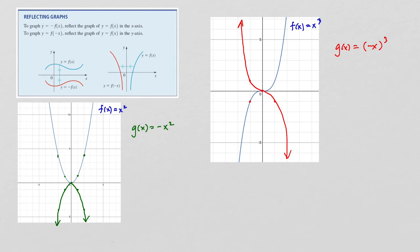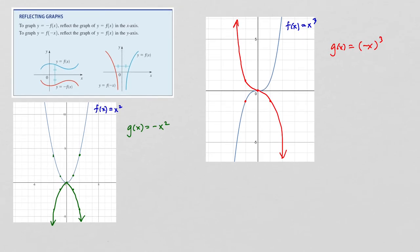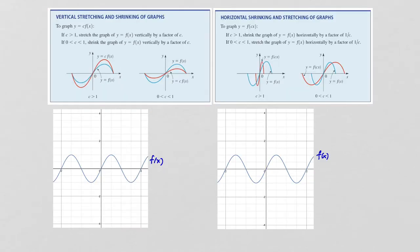So you can reflect across the x-axis, or you can reflect across the y-axis. One more thing to consider is stretching and shrinking of graphs. If you have a known graph of f(x) and you multiply that f(x) by a number c that is greater than 1, that is going to stretch the graph by a factor of c. And if you multiply by a number c that is between 0 and 1, that is going to shrink the graph by that factor.